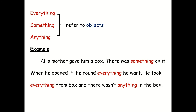Everything, something, anything refer to objects. Example: Ali's mother gave him a box. There was something on it. When he opened it, he found everything he wanted. He took everything from the box and there wasn't anything in the box.